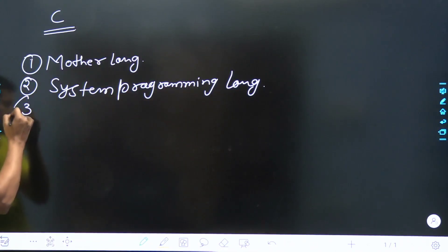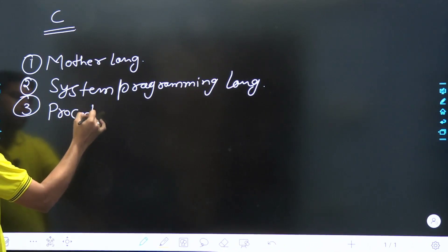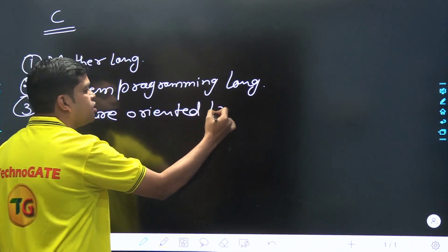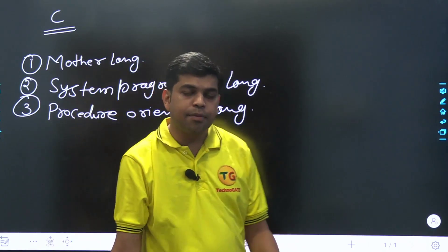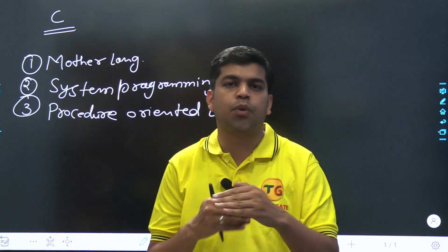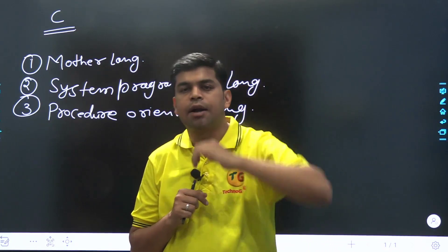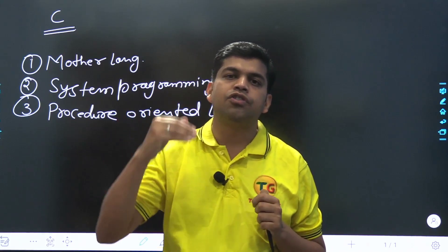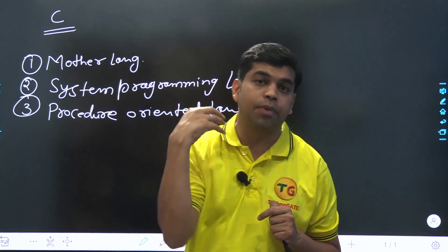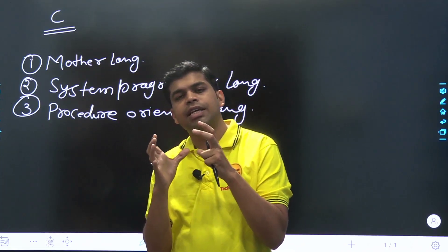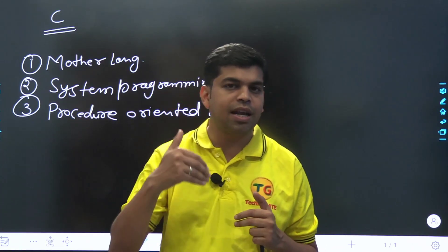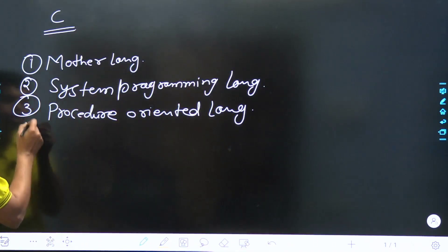C is also called a procedure-oriented language. Why? Because everything we need to understand when designing a program follows a particular procedure — we create the program and execute it with a defined flow. This programming language follows a particular procedure and flow chart. So everything is with the flow, and this is generally called procedure-oriented programming. It is also called function-oriented programming.